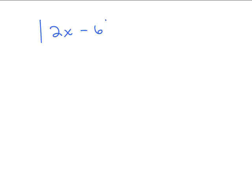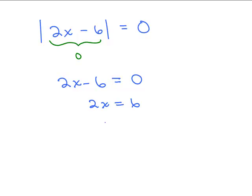Pretty easy, right? Now let's look at the second kind of problem. What if you had the absolute value of 2x minus 6 equaling 0? There's only one number that is 0 spaces away from 0, and that's 0 itself. So the expression inside has to equal 0. Any time you have an absolute value equaling 0, just set whatever's inside equal to 0 and solve. We'll add 6 to both sides and then divide by 2.